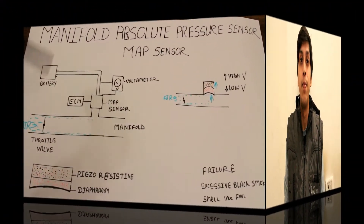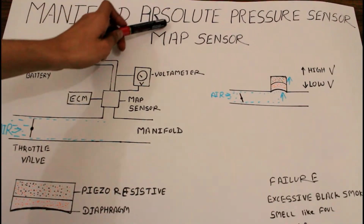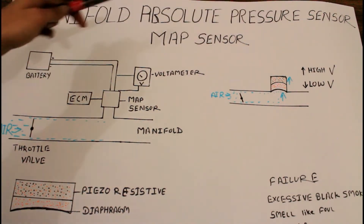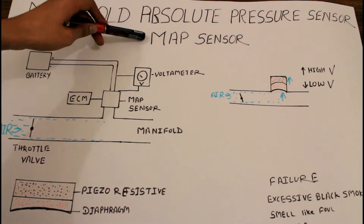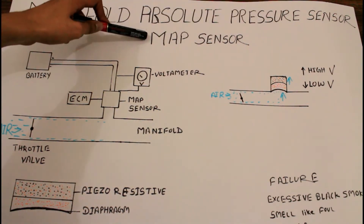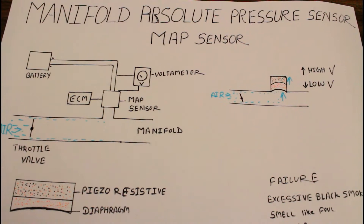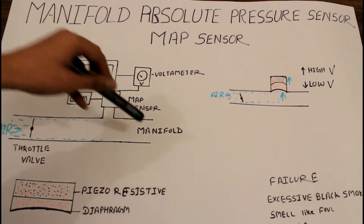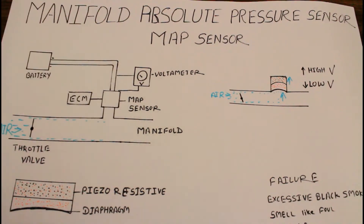The manifold absolute pressure sensor, or MAP sensor, helps us calculate the amount of air present in the manifold, so that we can send the accurate amount of fuel inside an engine cylinder and hence perfect combustion can be achieved.